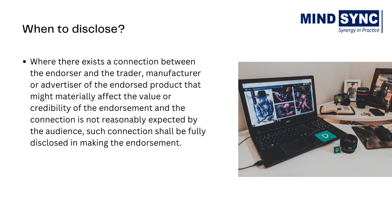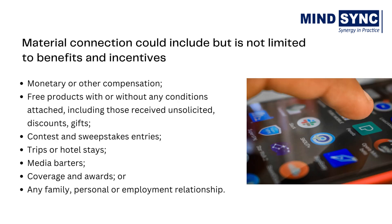The disclosure must take place where there exists a connection between the endorser and the trader, manufacturer, or advertiser of the endorsed product that might materially affect the value or credibility of the endorsement, and the connection is not reasonably expected by the audience. Such connection shall be fully disclosed in making the endorsement. Material connection could include, but is not limited to, benefits and incentives such as monetary or other compensation, free products with or without any conditions attached, including those received unsolicited, discounts, gifts, contest and sweepstakes entries, trips or hotel stays, media barters, coverage and awards, or any family, personal, or employment relationship.